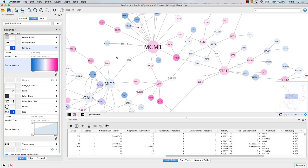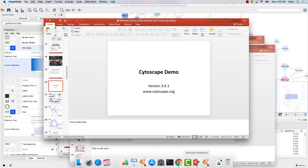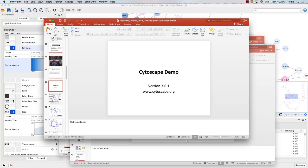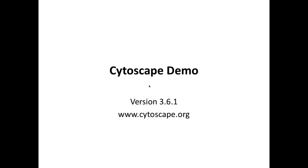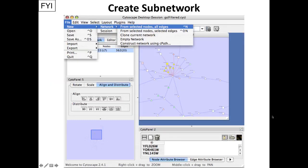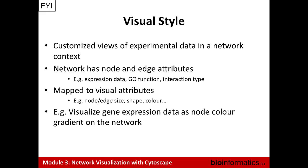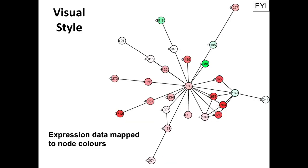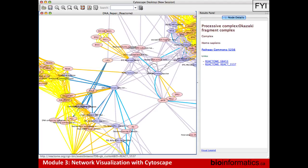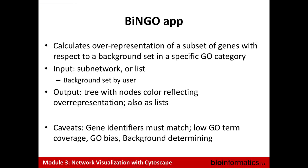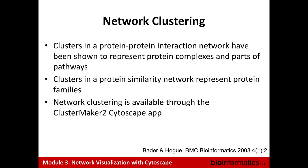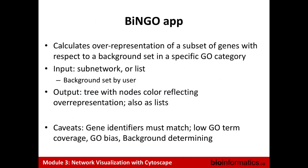Going back to the presentation, there are some additional backup slides that talk about the concepts I mentioned and some information about different apps that are available. There's one that does enrichment analysis, but we don't use it that much anymore because our current pipeline is better. 'Find Active Subnetworks' is similar to something we'll teach tomorrow — it's a way of clustering your network data. There's also a text mining app that's actually one of the more popular apps — you can do PubMed searches and it will try to get a network result.